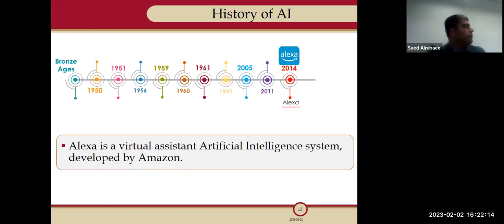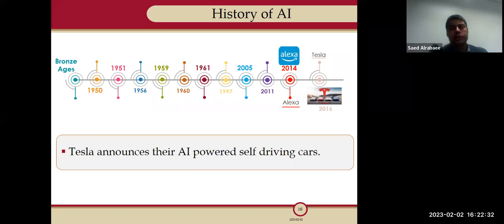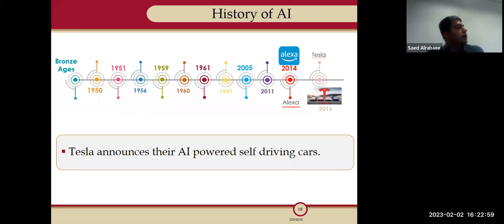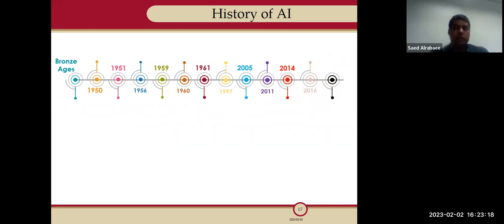In 2014, Alexa was invented by Amazon — a virtual assistant where you can ask for something and it replies. Then in 2016, Tesla started having autonomous cars, applying many branches of AI. Many people didn't believe we would ever ride a car that drives itself. Nowadays we can see Tesla everywhere, and despite some problems, its performance shows it did a really good job.